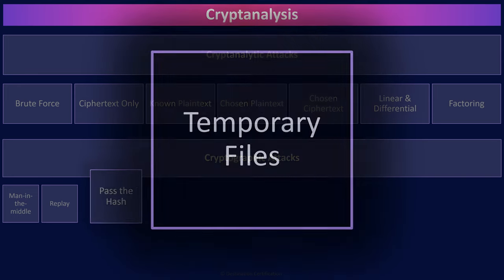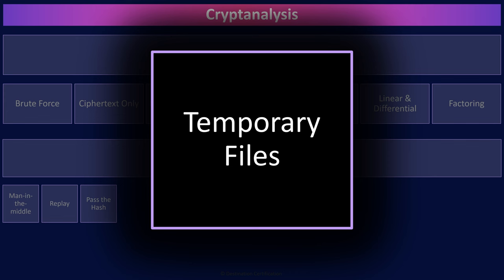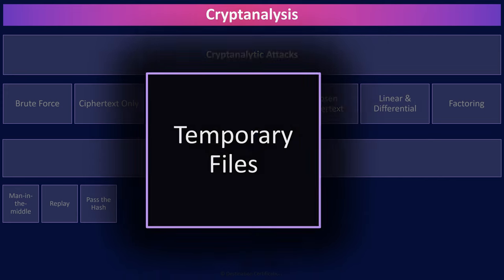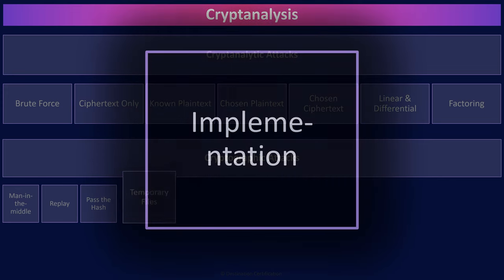When a cryptosystem is encrypting and decrypting data, temporary files are often used to temporarily store plaintext, ciphertext, and encryption keys. These temporary files may not be sufficiently secured. In a temporary file attack, the attacker gains access to sensitive plaintext or encryption keys by accessing these temporary files.